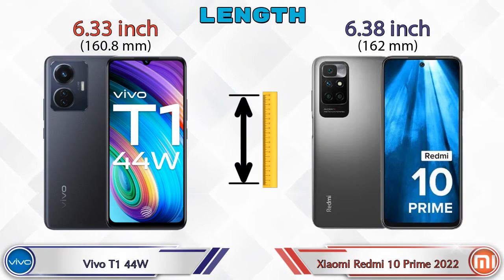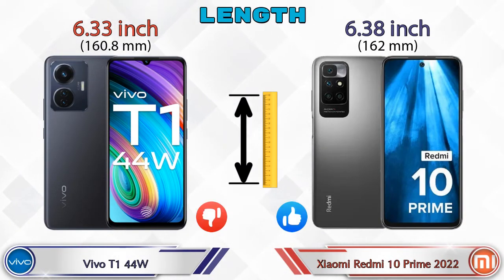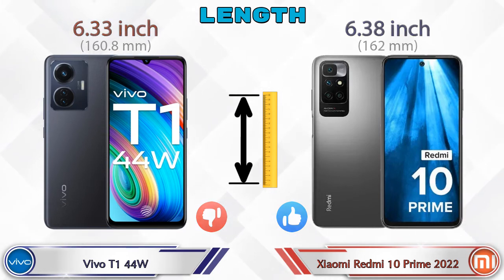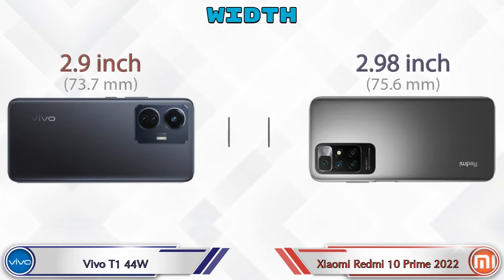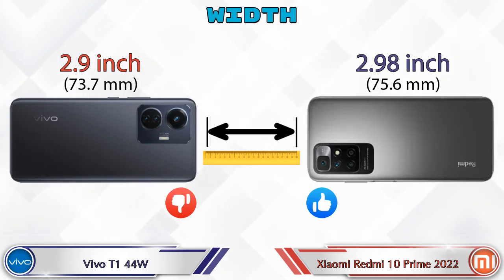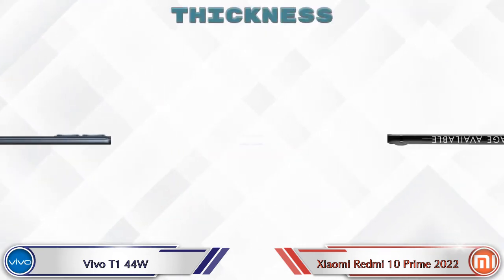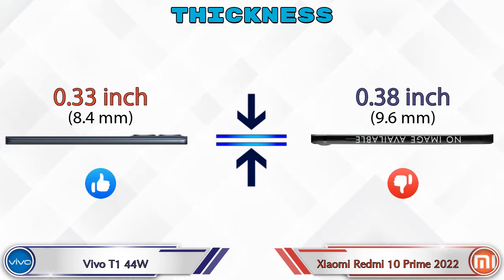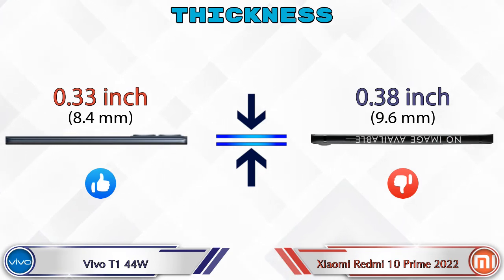Now let's check the dimensions. The length of the T1 44W is 6.33 inches and the 10 Prime 2022 is 6.38 inches. The width of the T1 44W is 2.9 inches and the 10 Prime 2022 is 2.98 inches. For thickness, the T1 44W is 0.33 inches and the 10 Prime 2022 is 0.38 inches, making it thicker than the T1 44W.